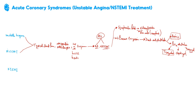Prasugrel is also contraindicated in patients with recent strokes or elderly patients because the risk of bleeding is much higher with that medication.